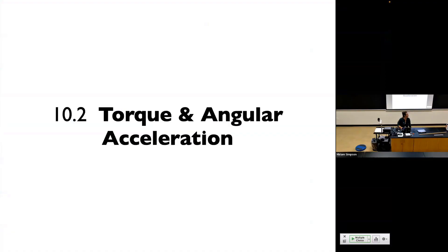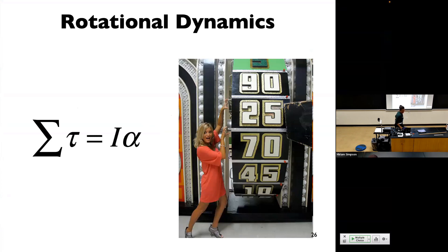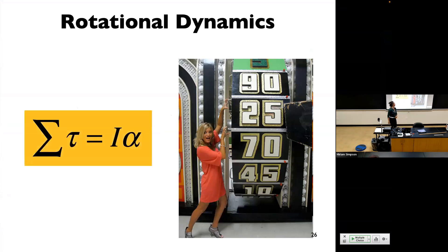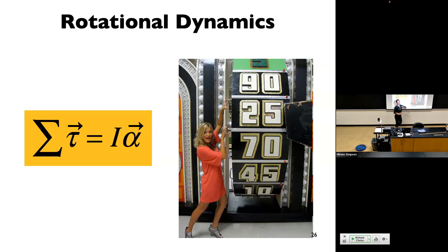Let's talk about torque and angular acceleration. We have force equals mass times acceleration — this is the rotational equivalent. The rotational equivalent of force is torque, so your net torque is equal to your moment of inertia times your angular acceleration. These are vectors, even if they're not written that way. We're going to try an example of this.